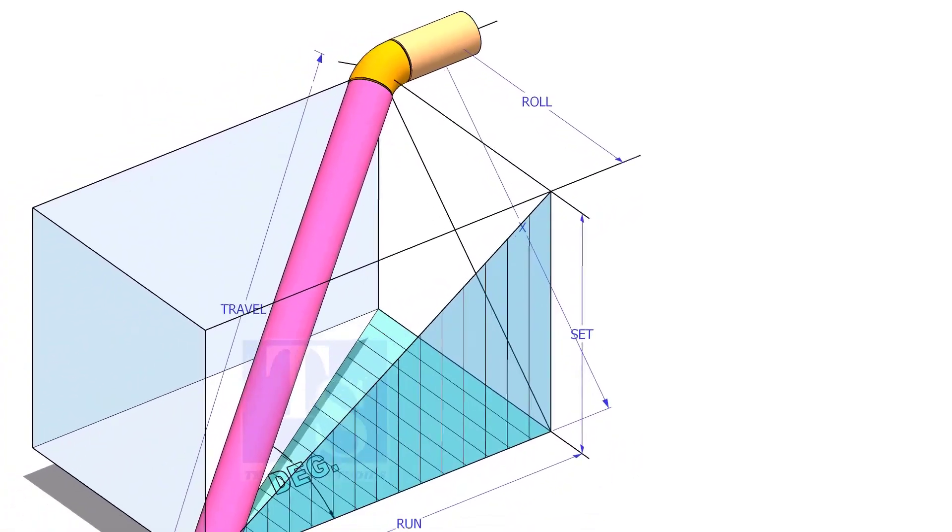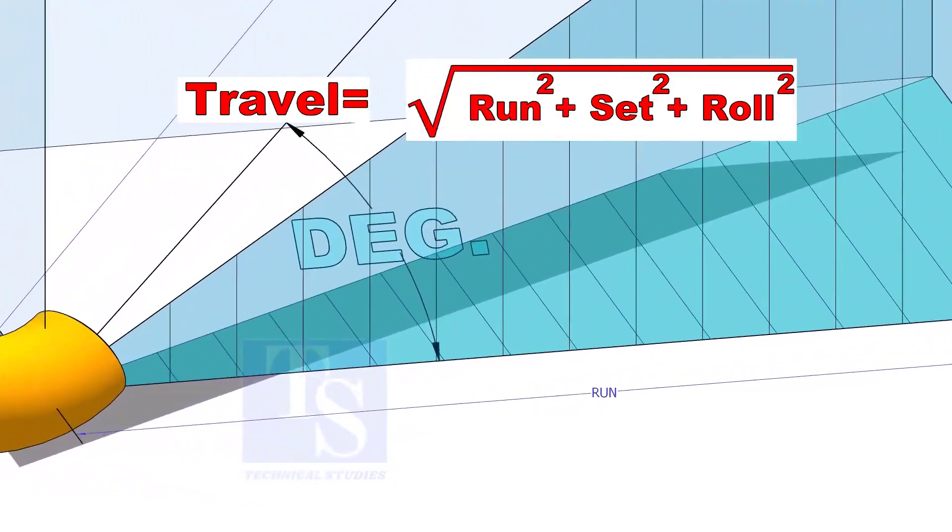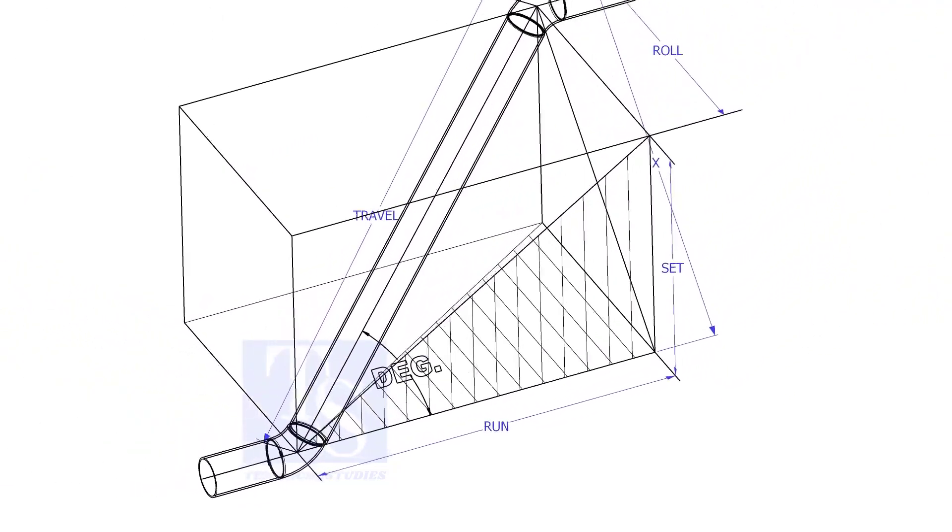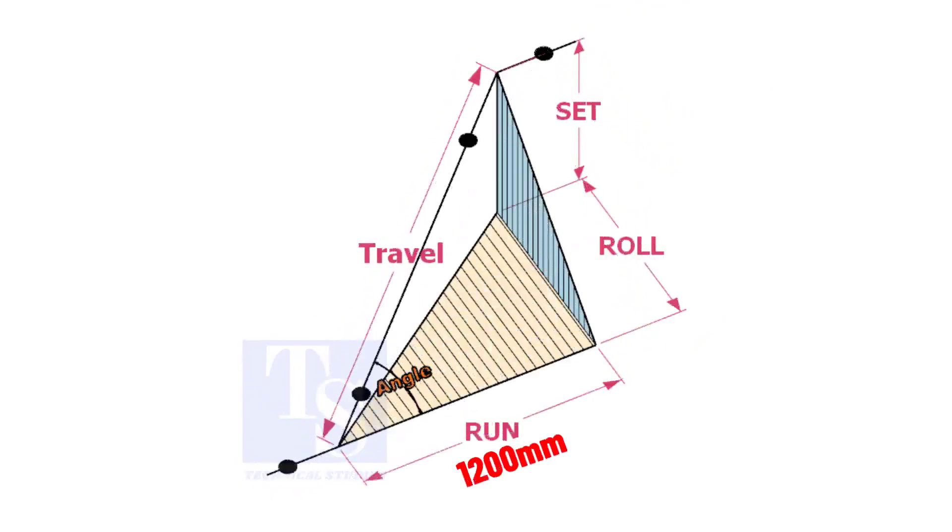The formula to calculate the travel length is root of the sum of the run, set and roll. Assume that the run is 1200 mm, set is 1000 mm and the roll is 800 mm.